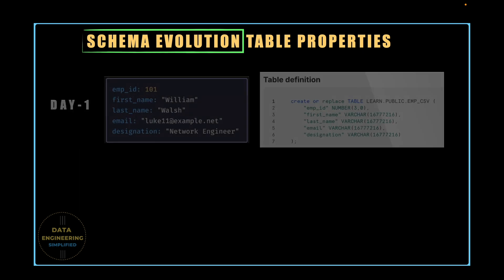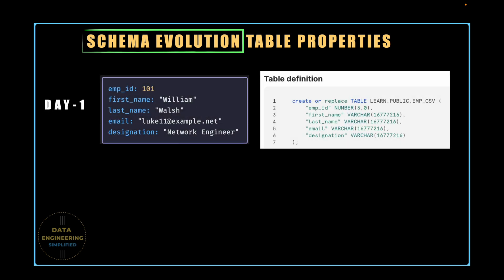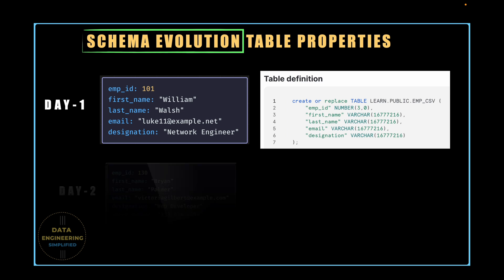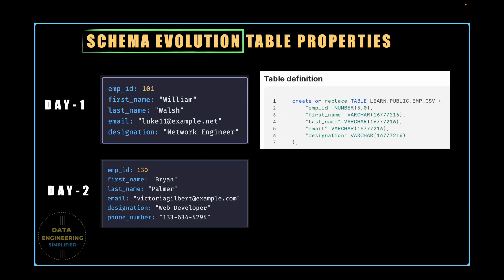If you look into this simple employee example, on day one we have designed our table considering five fields in our employee data. But on day two, there is a possibility that employee data may evolve and add one additional column called phone number. Systems that generate data add new columns to accommodate additional information, which requires downstream tables to evolve accordingly. If we have to handle this manually, it's quite time-consuming and also leads to data pipeline failure.